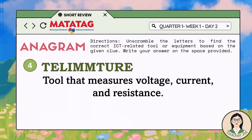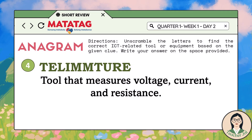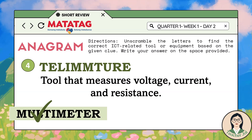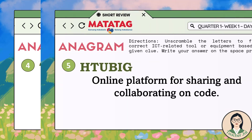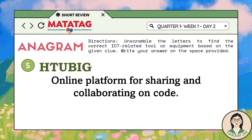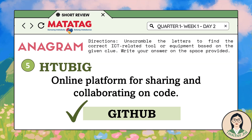Number 4: TLIMMTURE — a tool that measures voltage, current, and resistance. The answer is multimeter. That's right. Number 5: HTUBIG — an online platform for sharing and collaborating on code. The answer is GitHub. You got it right.